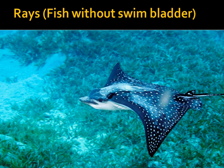Rays are cartilaginous fishes belonging to the superorder Batoidea, and together with their close relatives the sharks, they comprise the subclass Elasmobranchii. Rays represent the largest group of cartilaginous fishes, with over 600 species in 26 families. They are distinguished by their flattened bodies, enlarged pectoral fins that are fused to the head, and gill slits placed on their ventral surfaces.